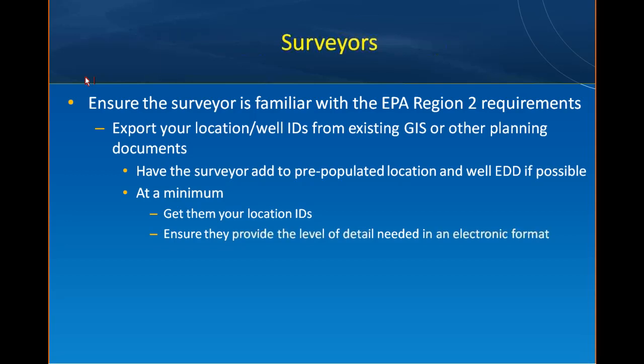Surveyors also need to understand Region 2 requirements and know the valid values they're supposed to report back. It's good to export location and well IDs to surveyors, perhaps in a pre-populated location and well EDD, so they can go out, do their work, repopulate that EDD, and return it to us — avoiding having them retype names and leave out pesky dashes, spaces, and zeros. If surveyors can't pre-populate the EDD, at minimum provide them with the location information and make sure they return the level of detail required to meet the EDD.